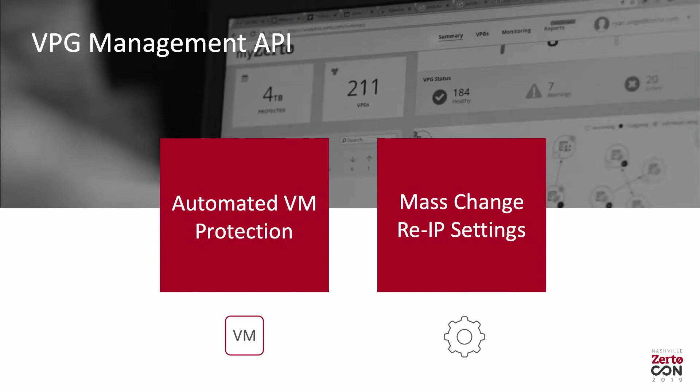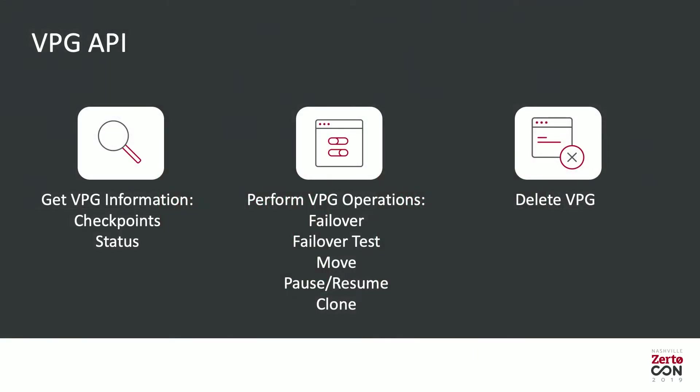We also have a VPG API that's more operational — you can start a failover, start a failover test, and the new one: Move the VPG. So you can automate migrations too, which is especially useful for cloud service providers and their onboarding process. You can also do pause and resume, which we use for example in supporting SQL clusters — we have a script that monitors if a server fails over and based on that pauses and resumes different VPGs.